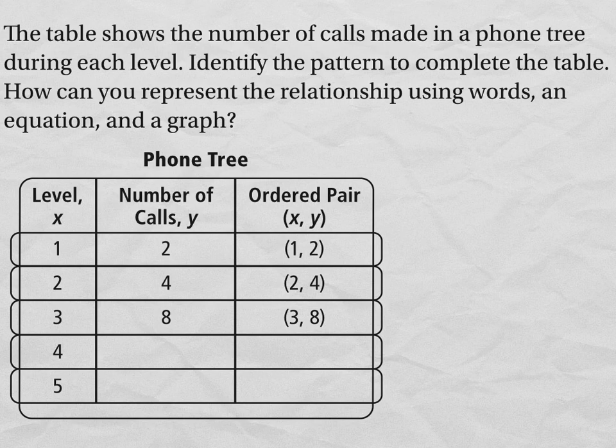Now, we always want to look to see if there's one thing that we can do to the x value to get the y value. So you have to be careful here. To go from 1 to 2, you could add 1. But when you go down to 2, if you add 1 to 2, that would just be 3.